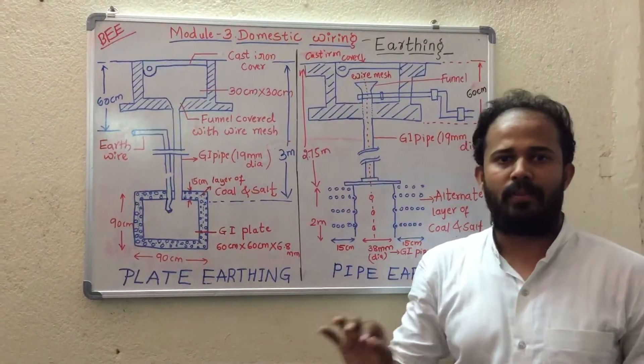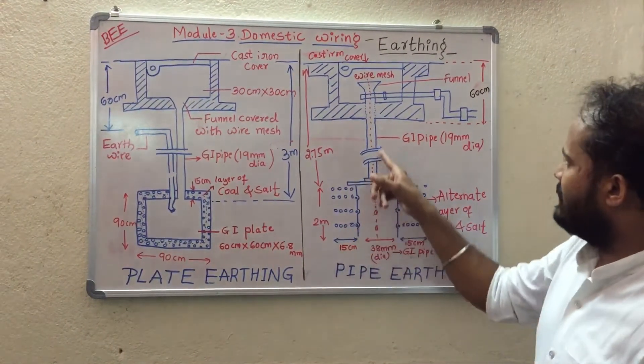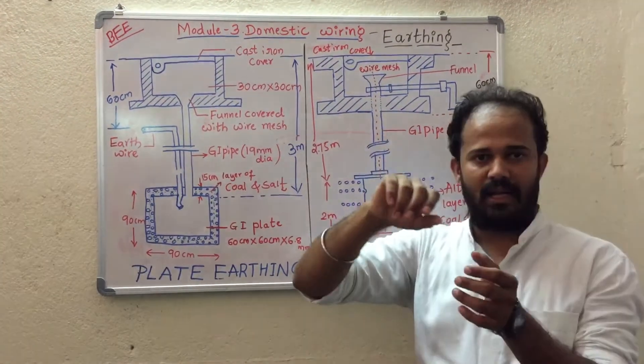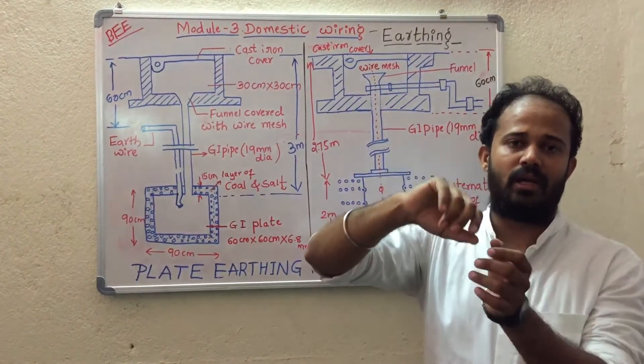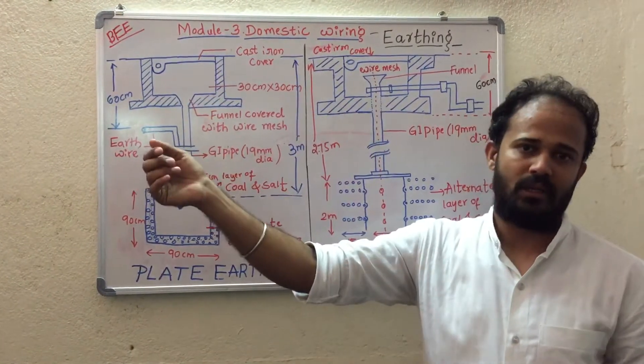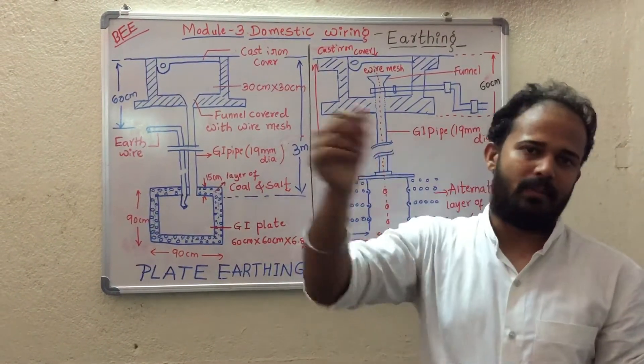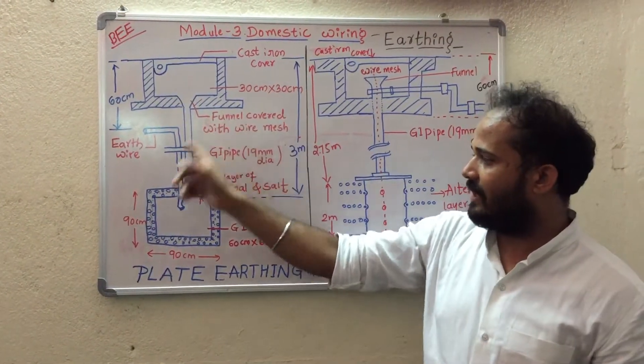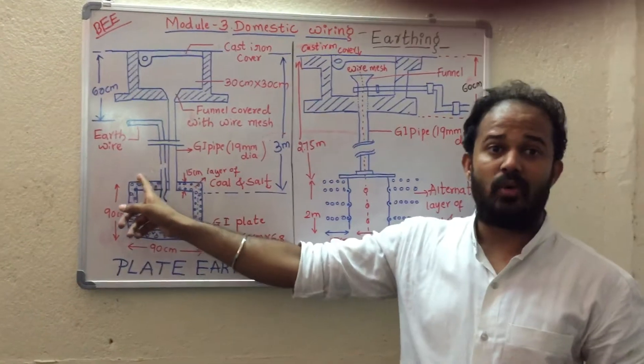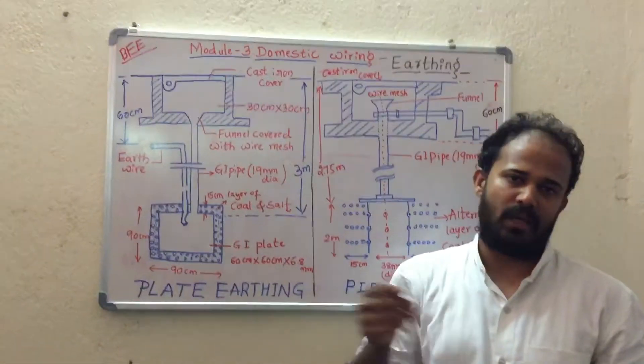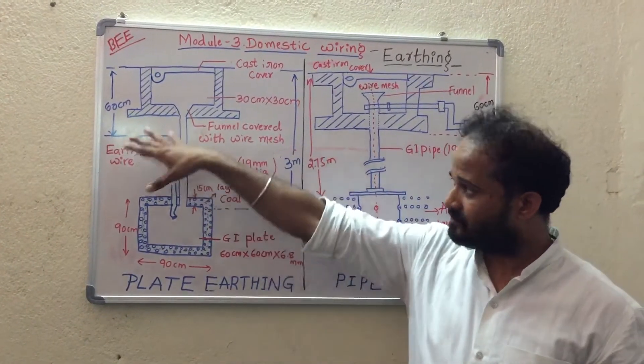The main advantage of pipe earthing is that the wire mesh is connected in the same funnel, so physical inspection and continuity test can be done manually. We can check for physical damage or discontinuity of the cable manually, unlike in case of plate earthing.